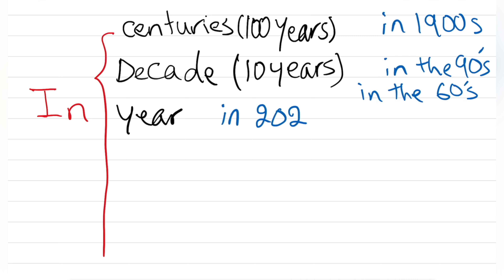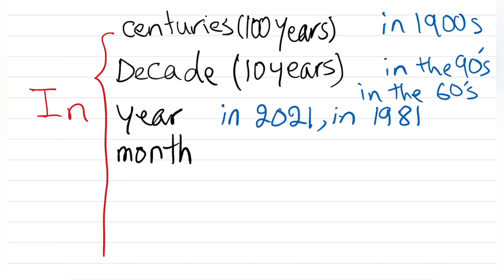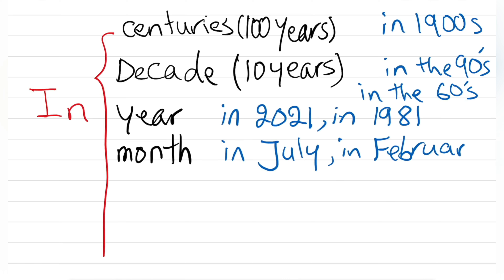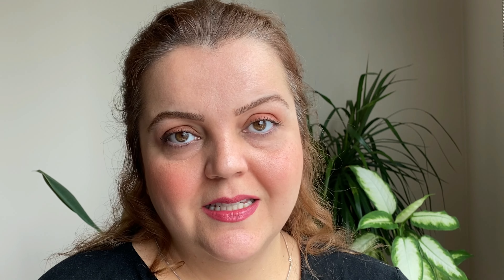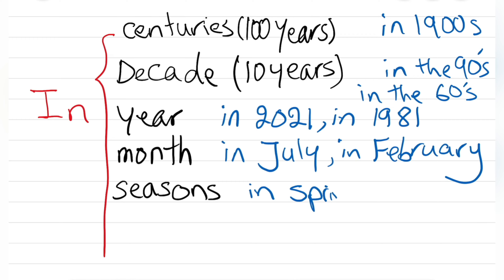For years we use IN — for example, 'in 2021' or 'I was born in 1981.' We use IN with all months — 'in July,' 'in February,' 'in March.' We also use IN with weeks — for example, 'I did my homework in one week.' And for seasons, we use IN as well.